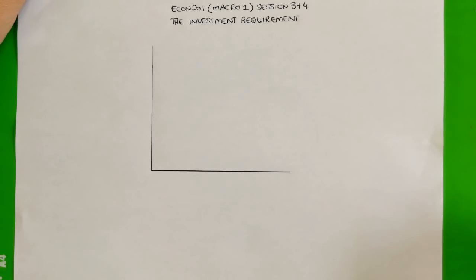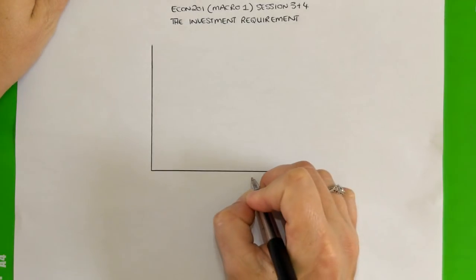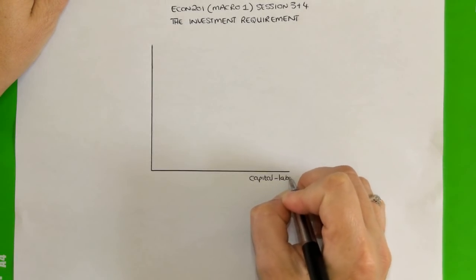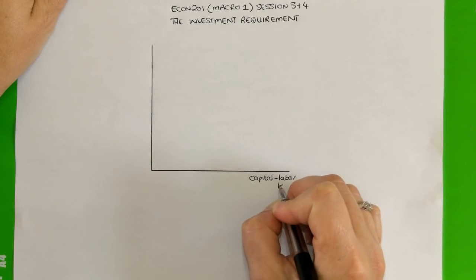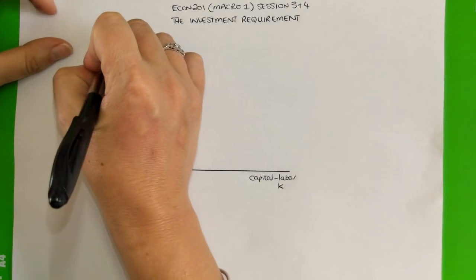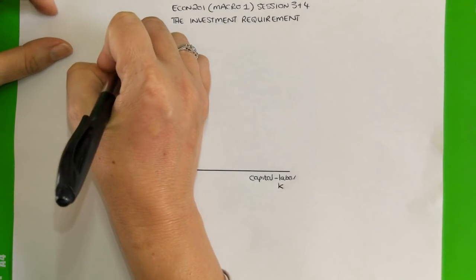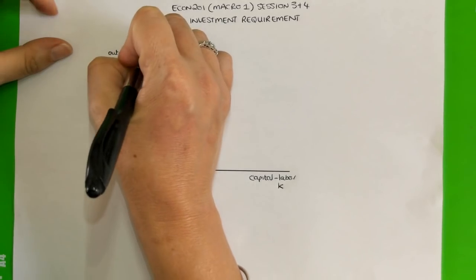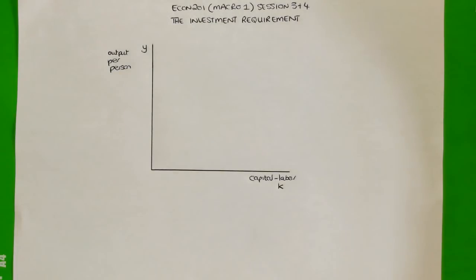Can you remember what was on each of the axes? On the horizontal axis, we're measuring the capital-to-labor ratio. Remember that that is designated with a small or lowercase k, and it's measuring the amount of capital stock per person. On the vertical axis, we're measuring output per person, which is shown by a lowercase y.